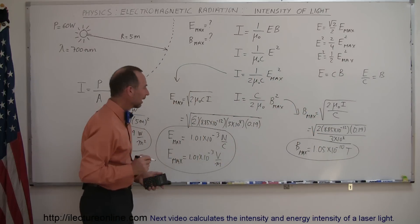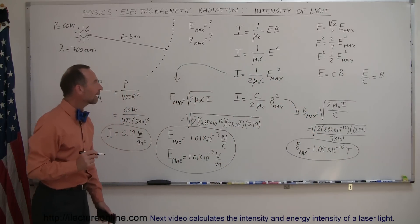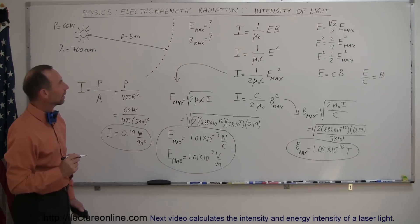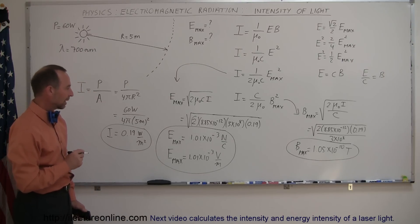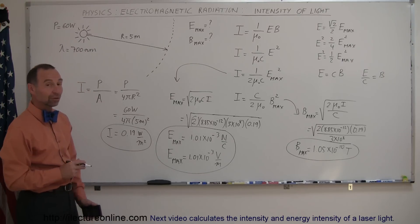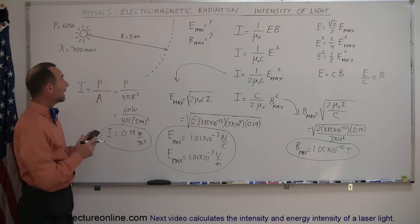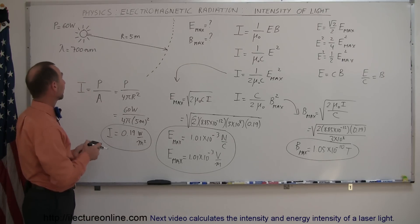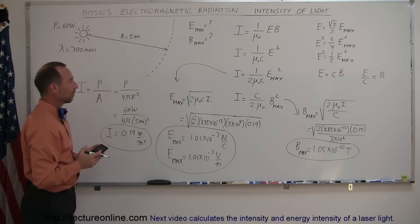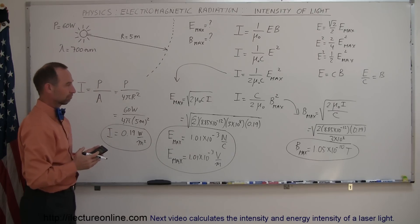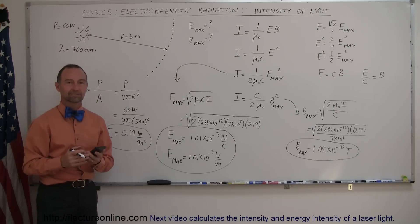That is how you find the strength of the electric field and magnetic field oscillations of any source of electromagnetic radiation at any distance away from the source.